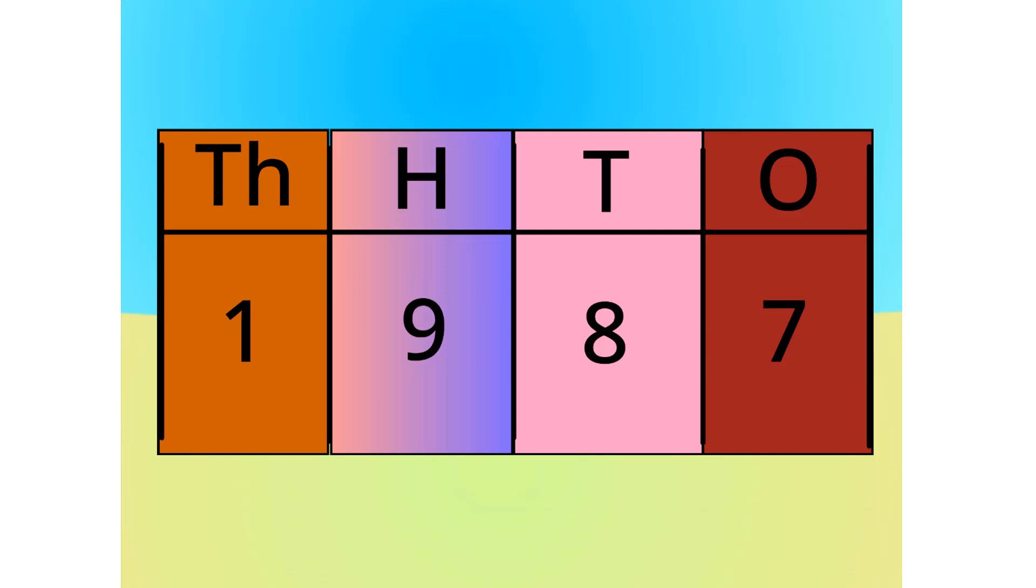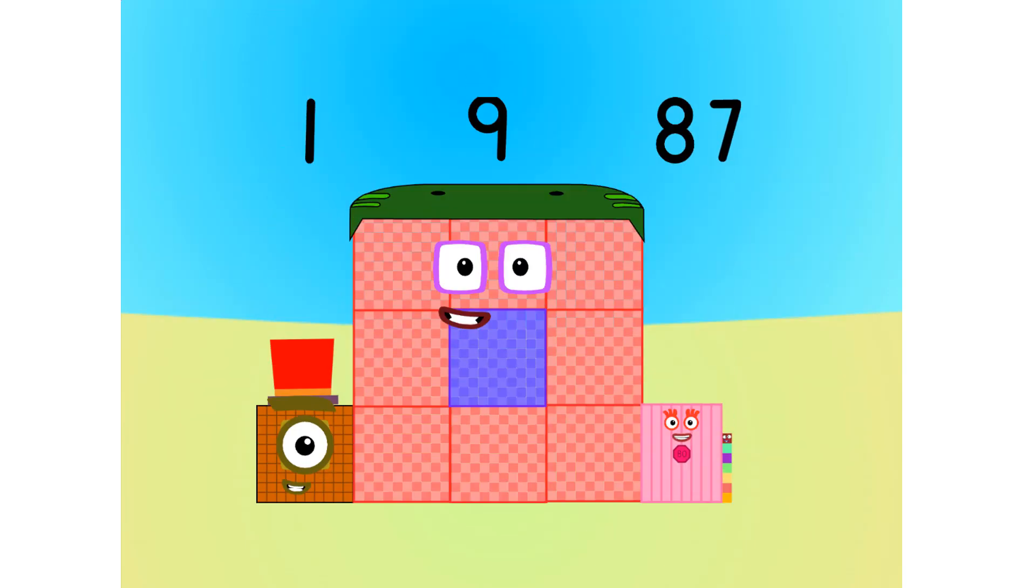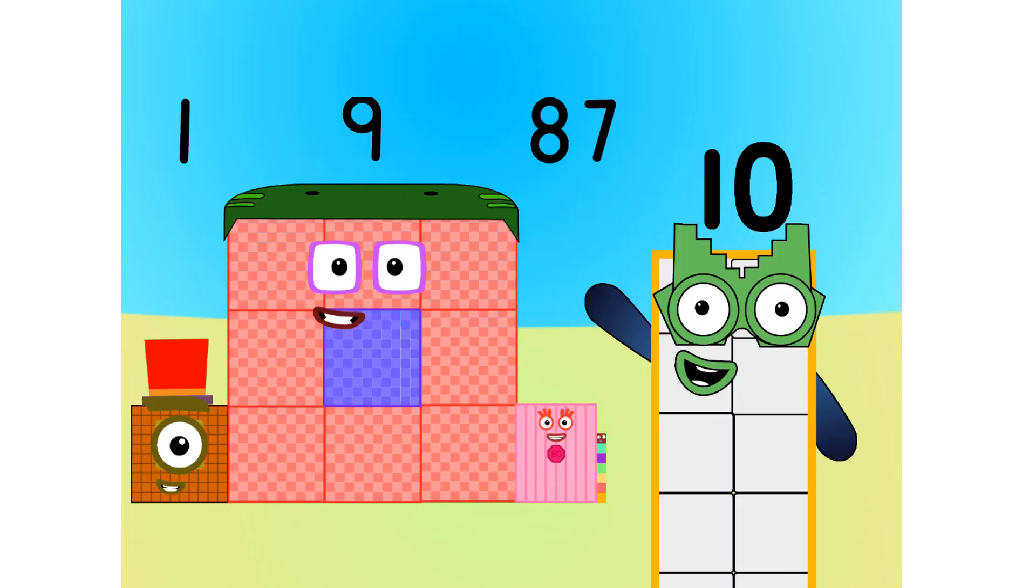Let's see this in block form, shall we? As you can see, this number is 1,900s, 8, 10s, and 7, 1s. Let me carry on with the first method.